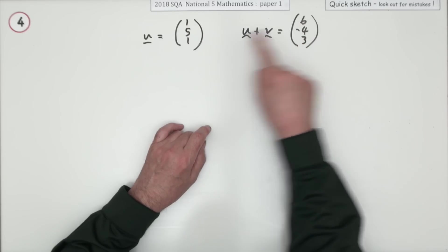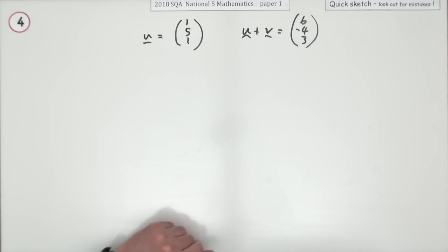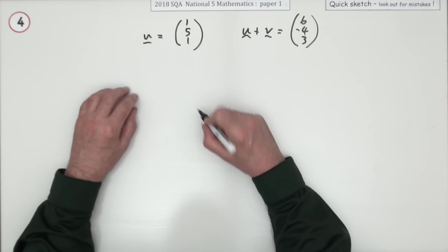1, you must have added 5. 5, you must have taken off 9. 1, you must have added 2. You could do that. Maybe I'll just set it out.